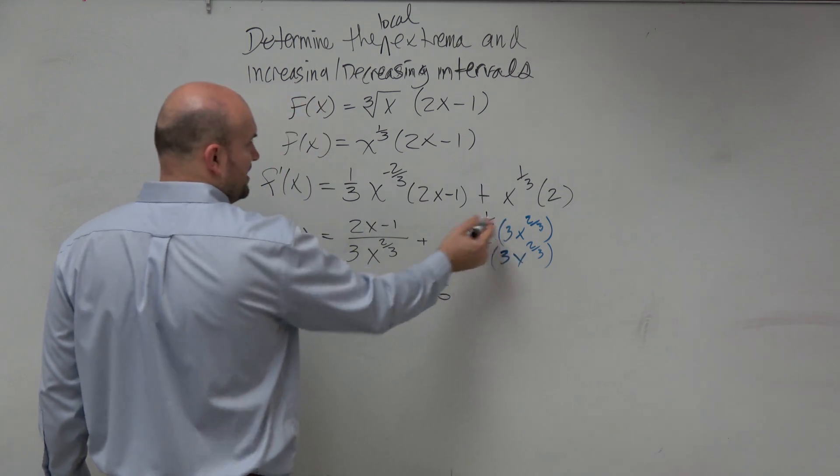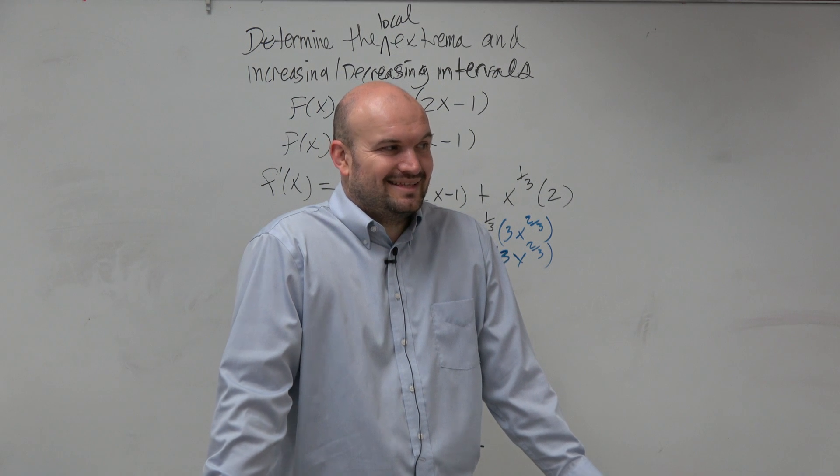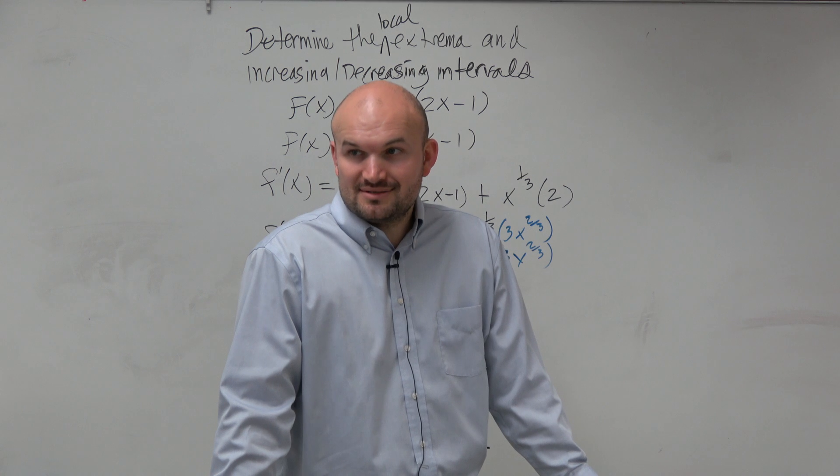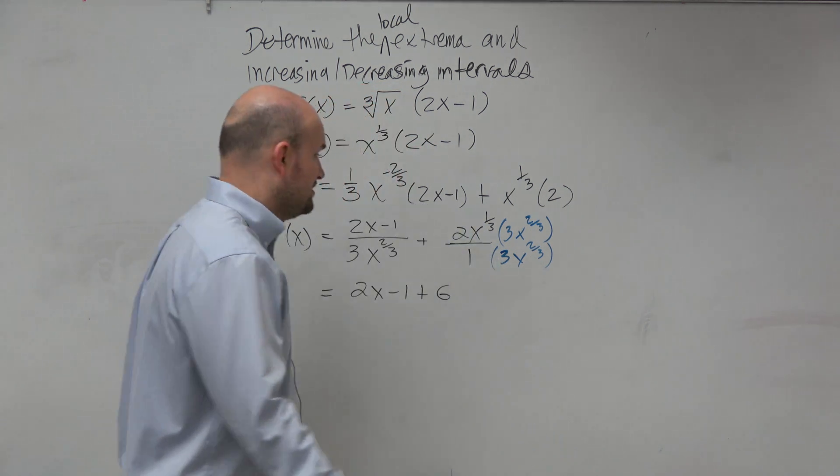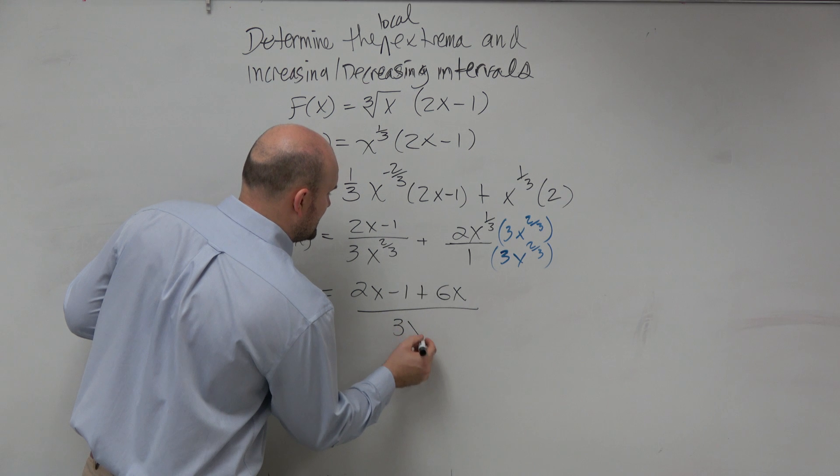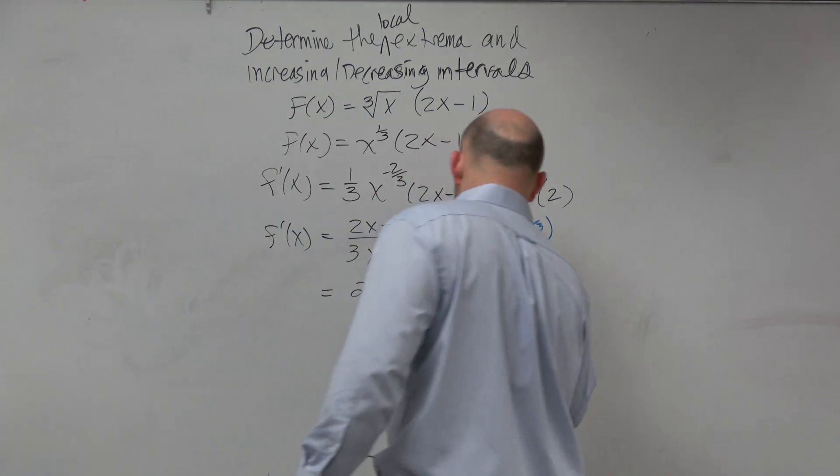So when I get this, I get 6, and then x^(1/3) times x^(2/3) is just going to be x^(3/3), right? You add the powers. x^(3/3) is just x. All over our common denominator, x^(2/3).